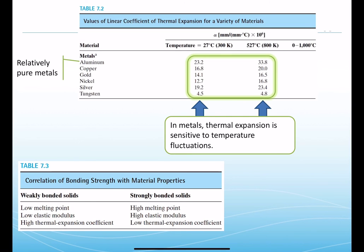Looking at alpha values for metals, typical values for relatively pure metals range from about 5 to 25 (×10⁻⁶/°C). Alpha is temperature-dependent — at higher temperatures, these values increase, meaning thermal expansion in metals is sensitive to temperature.